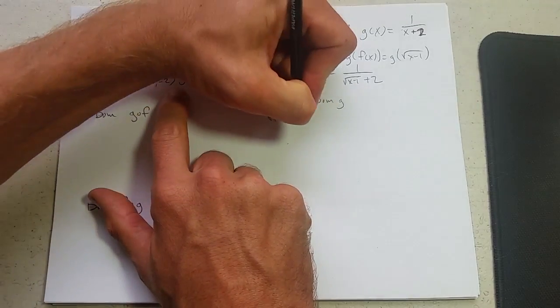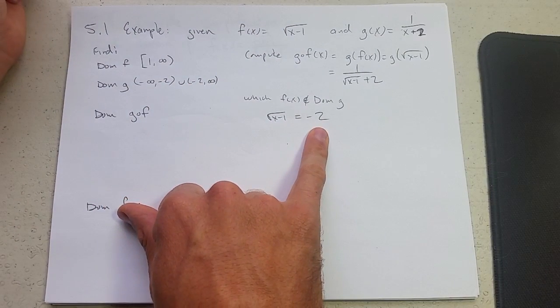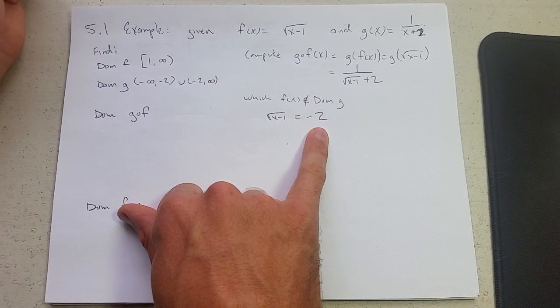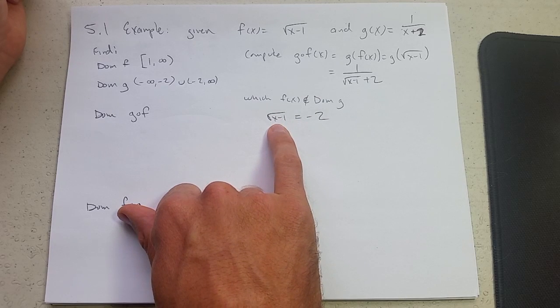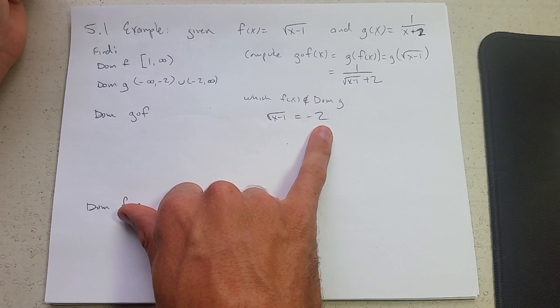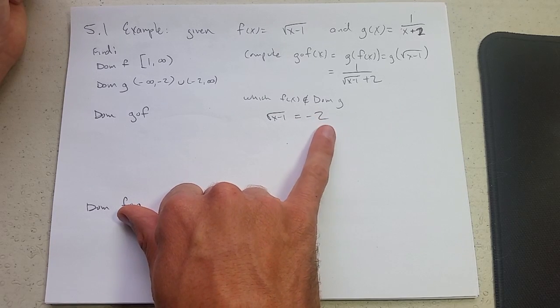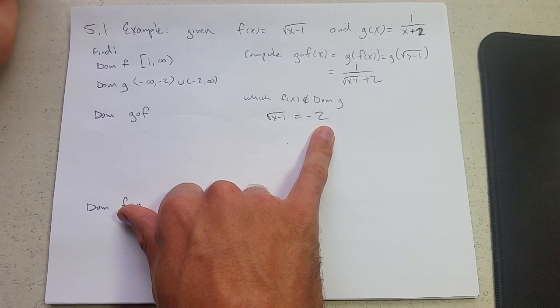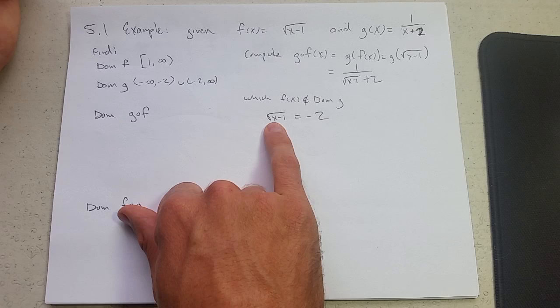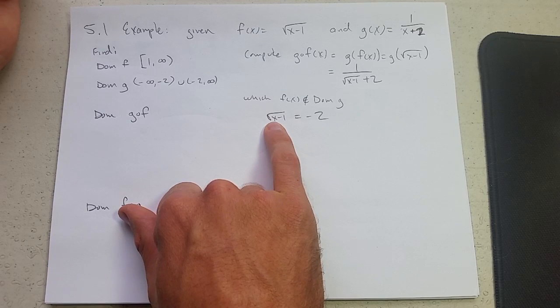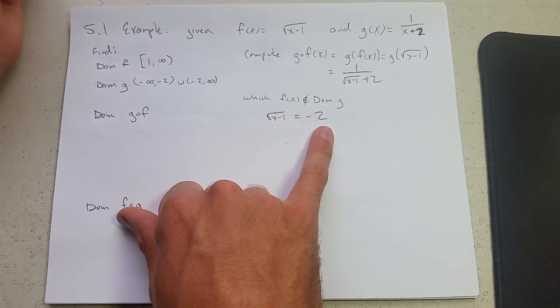So if you're not in the domain of g, there's only one thing not in the domain of g, that's negative 2. So how do we solve this? Well, we have a square root and a negative 2 over here. You cannot have a square root giving you negative unless you use imaginary numbers. And actually, even then, i is not negative anything. It's the square root of negative 1. So we have no solutions right here.